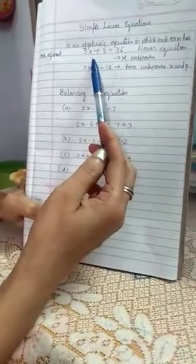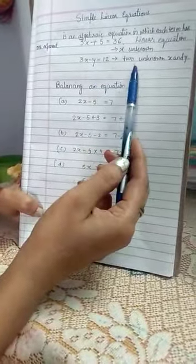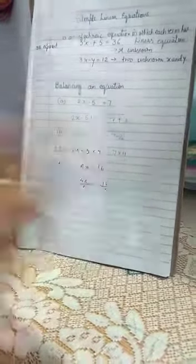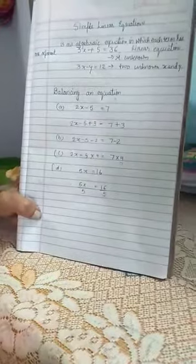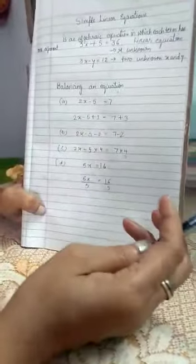What are the unknown variables? 3x minus y equals 12 has two unknown variables, x and y. If we have to balance a simple linear equation, we follow steps using addition, subtraction, multiplication and division.